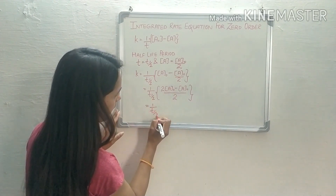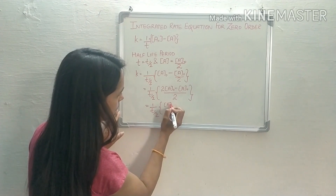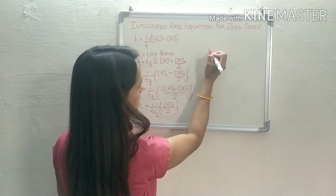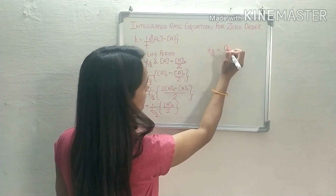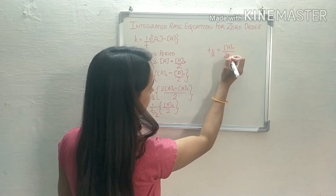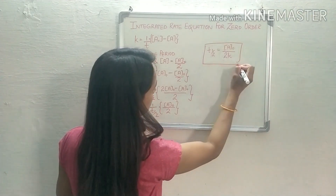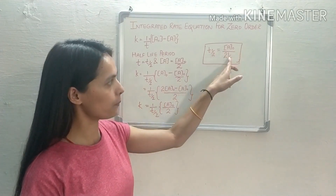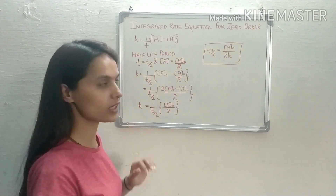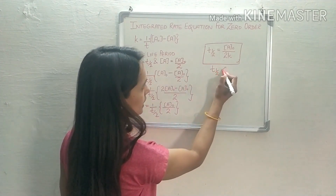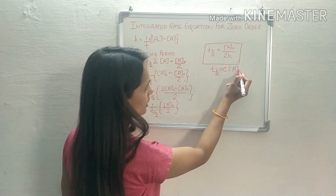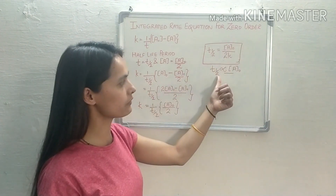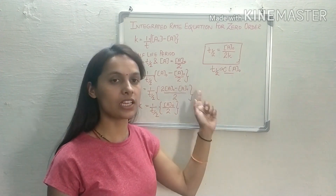On solving: k equals (1/t½)(A₀/2). On rearranging we get: t½ equals A₀ divided by 2k. So this is the expression of half-life period for zero order reaction. According to this equation we can conclude that t½ is directly proportional to the initial concentration of the reactant when the reaction is zero order.